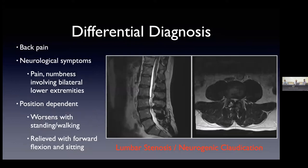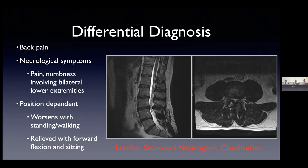Lumbar stenosis and neurogenic claudication are very common in the aged population. What distinguishes this from a herniated disc is that patients often experience symptoms in both lower extremities. Symptoms are activity-dependent — they get worse with standing and with walking, and they are relieved with forward flexion or sitting. On imaging, you can see the spinal cord ends, the nerves travel down, and at the affected level there is very little room in the spinal canal — three-dimensionally, there's little room for those nerves to travel through.